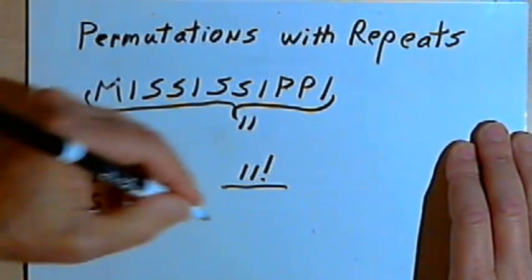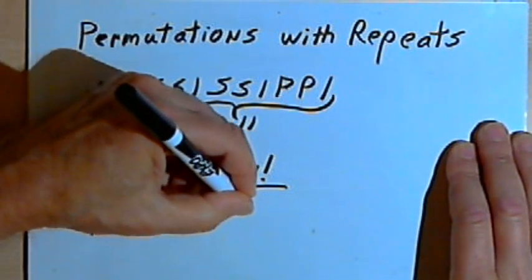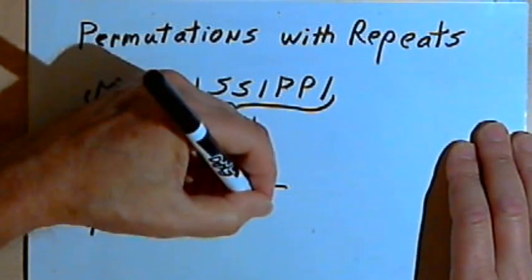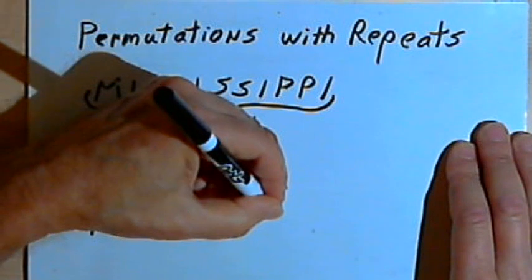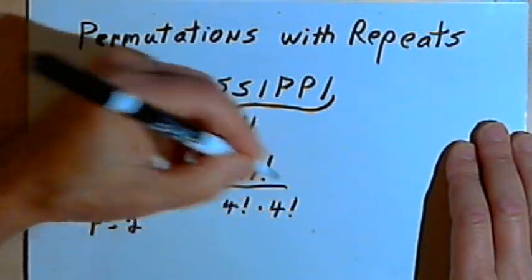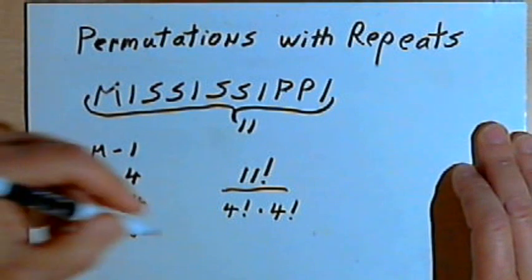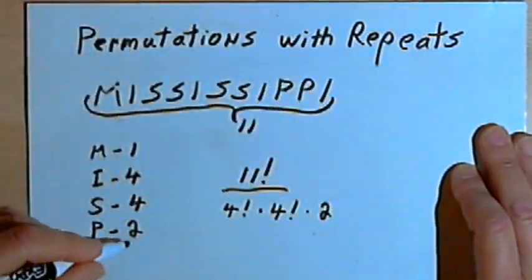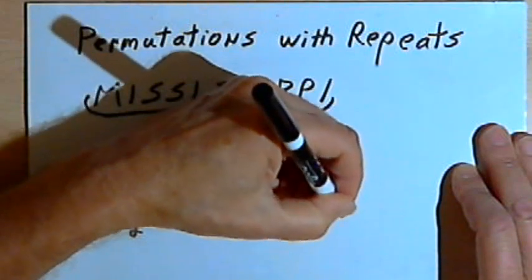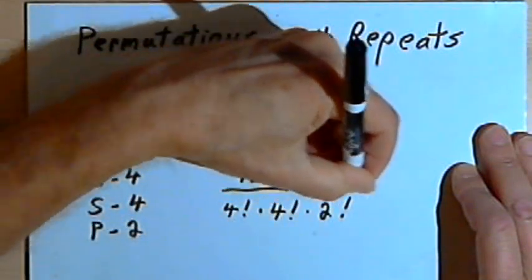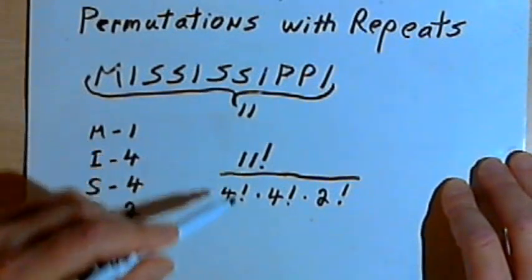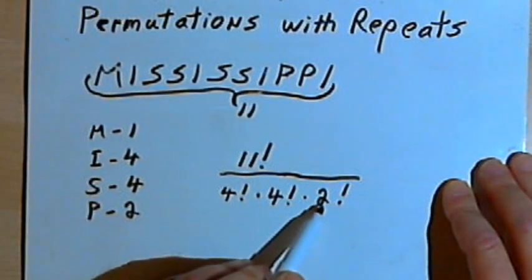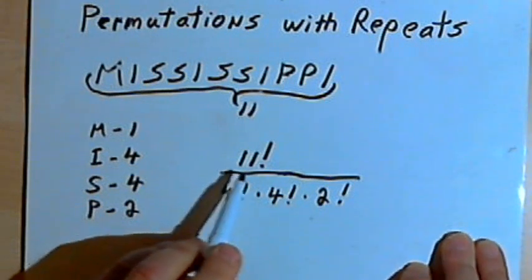So I've got an I repeating four times, that means the denominator is going to contain 4 factorial. S repeats four times, so the 4 factorial is going to be multiplied by 4 factorial again for the S. P repeats twice, so once again I'll put 2 in the denominator, 2 factorial. And now I've got 11 factorial over 4 factorial times 4 factorial times 2 factorial.